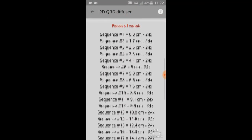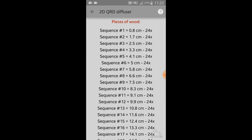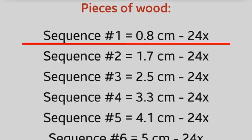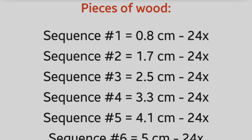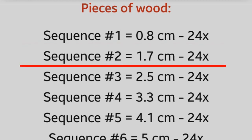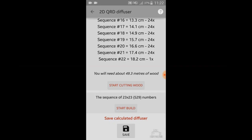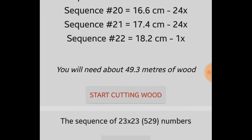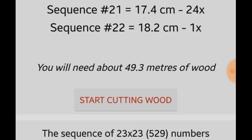So there are the pieces of wood. The first one is the wood with a sequence number of 1, which is 0.8 cm long and you need 24 pieces of that. Then there is sequence number 2, which is 1.7 cm and you need 24 pieces of that too. If you go to the bottom, there is how much wood you will need. You will need to order about 49.3 m of wood if you want to build this diffuser.